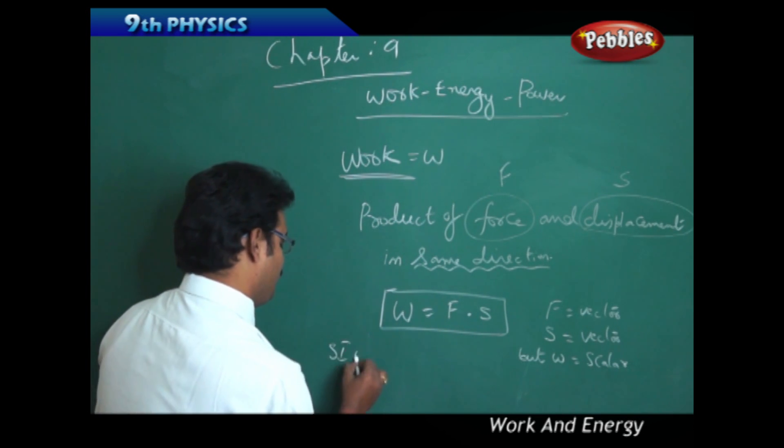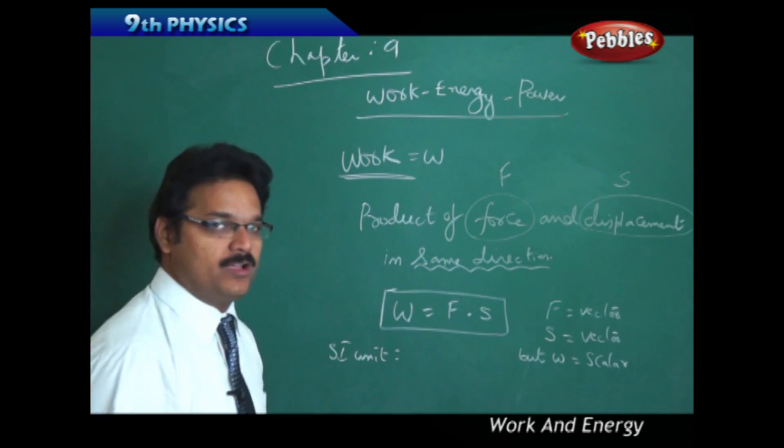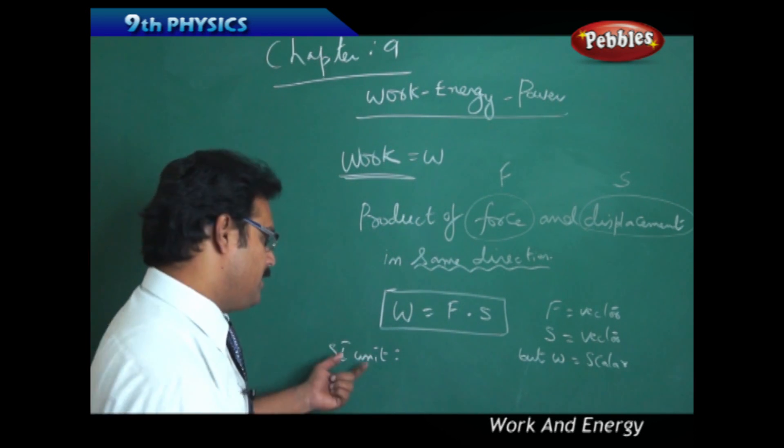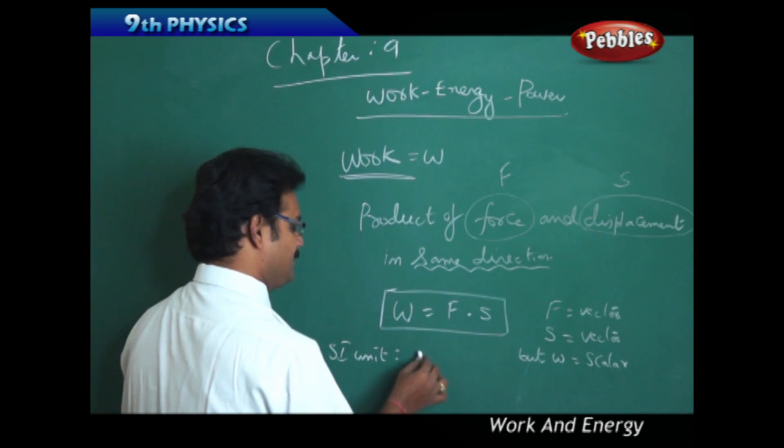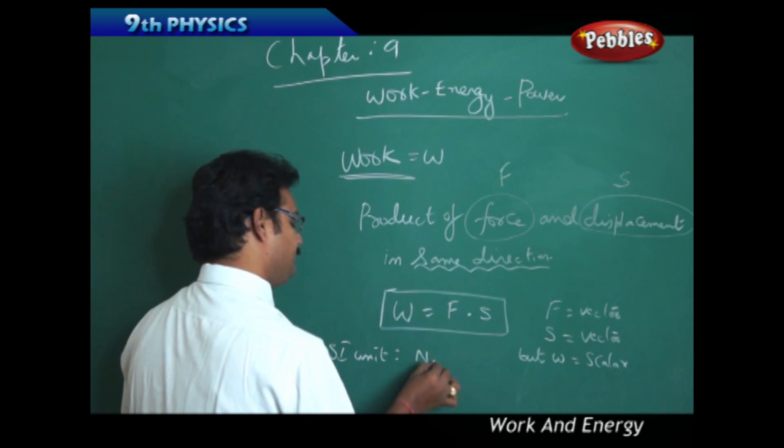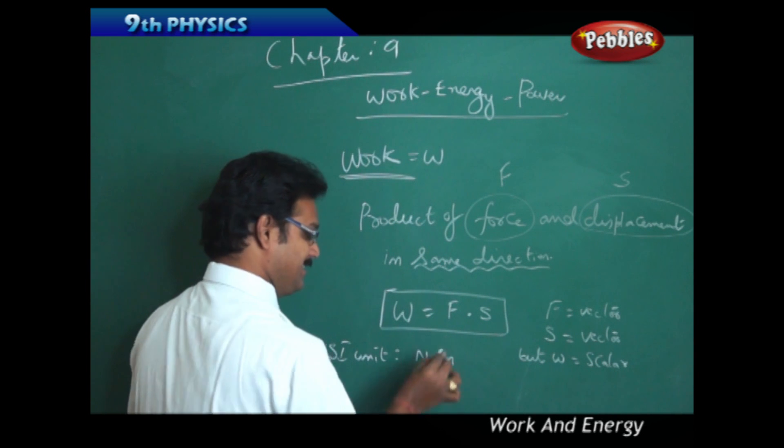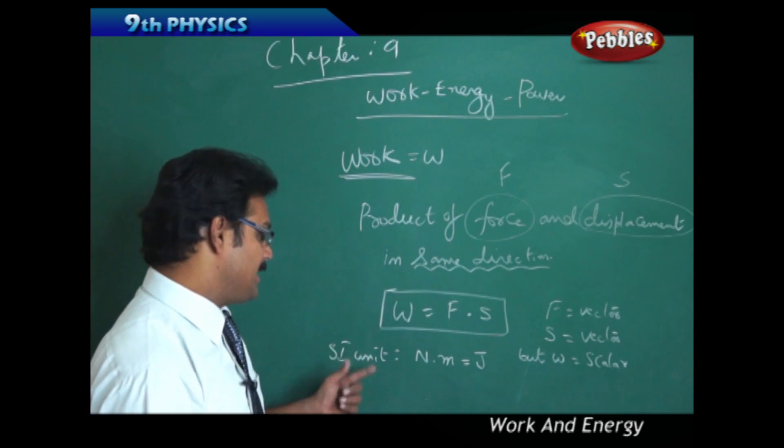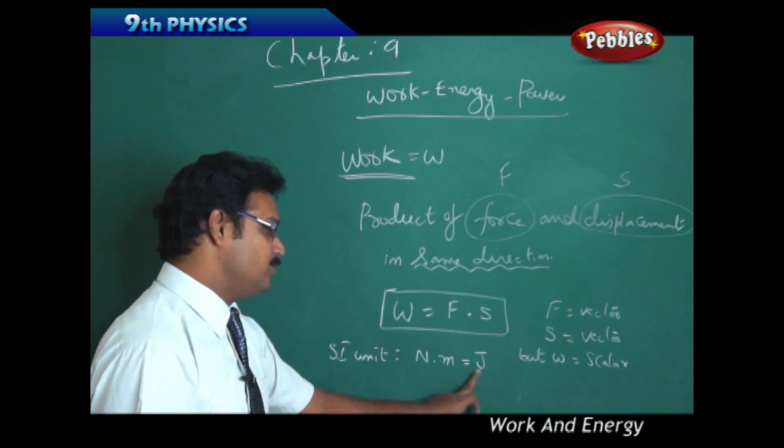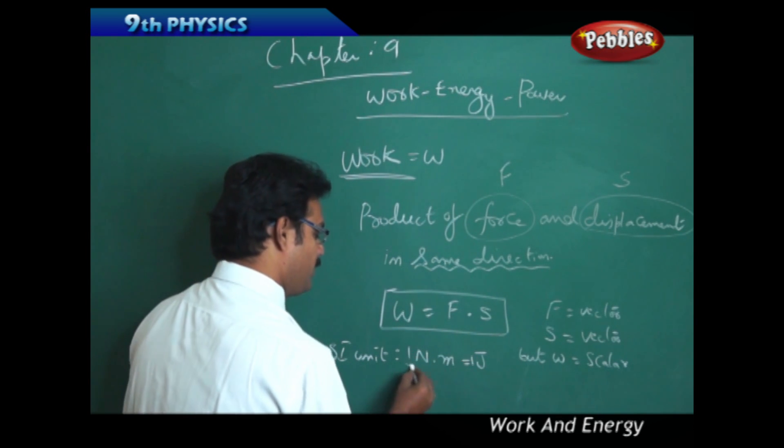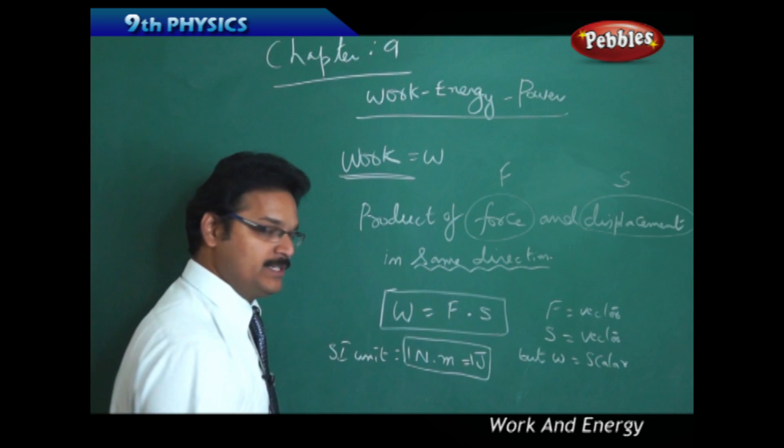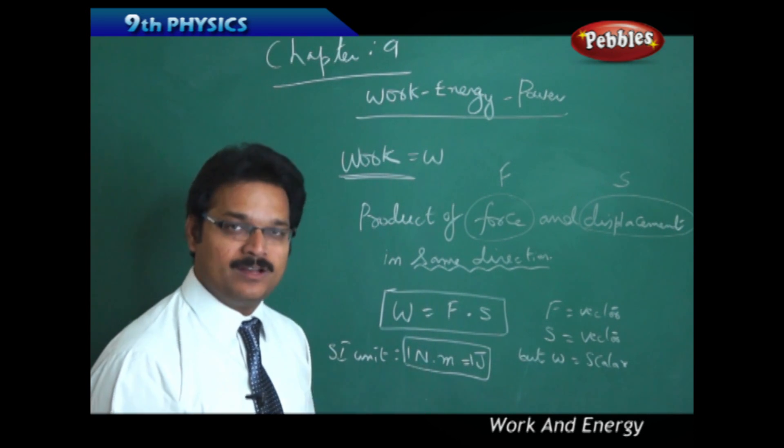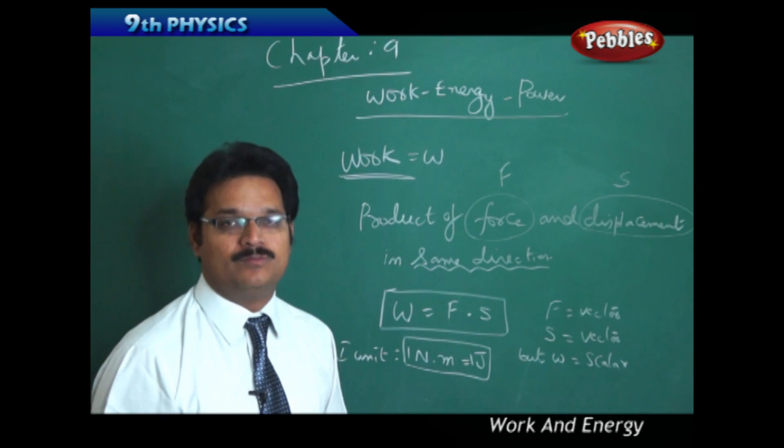Now if you take the unit of work in SI system, force unit is Newton, displacement unit is meter, and this Newton meter can also be called as Joule. So SI system work unit is Joule and one Joule equals to one Newton meter. Suppose if I say that I have done 200 Joules of work, it is also equal to I have done 200 Newton meters of work. Both are same.